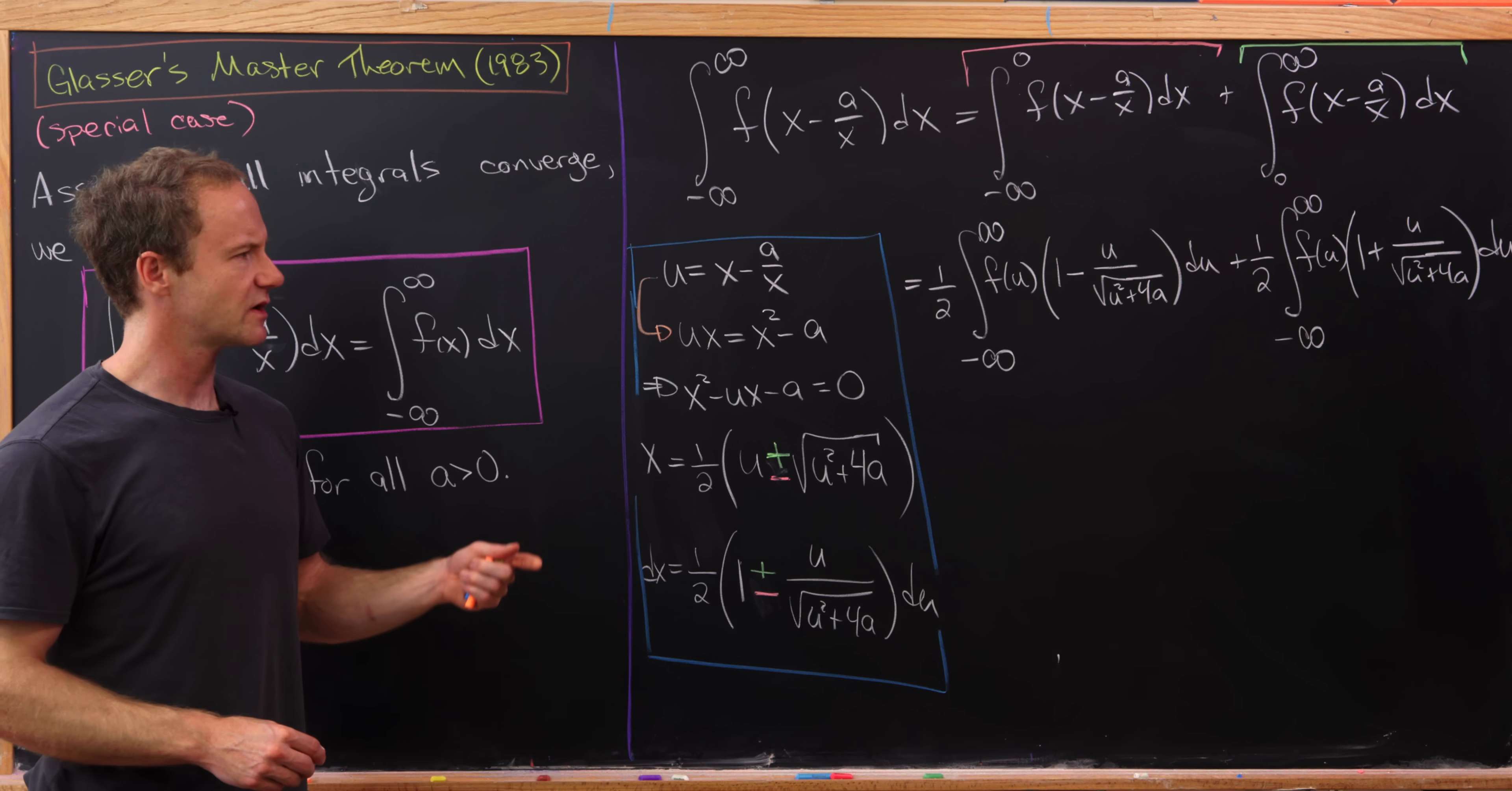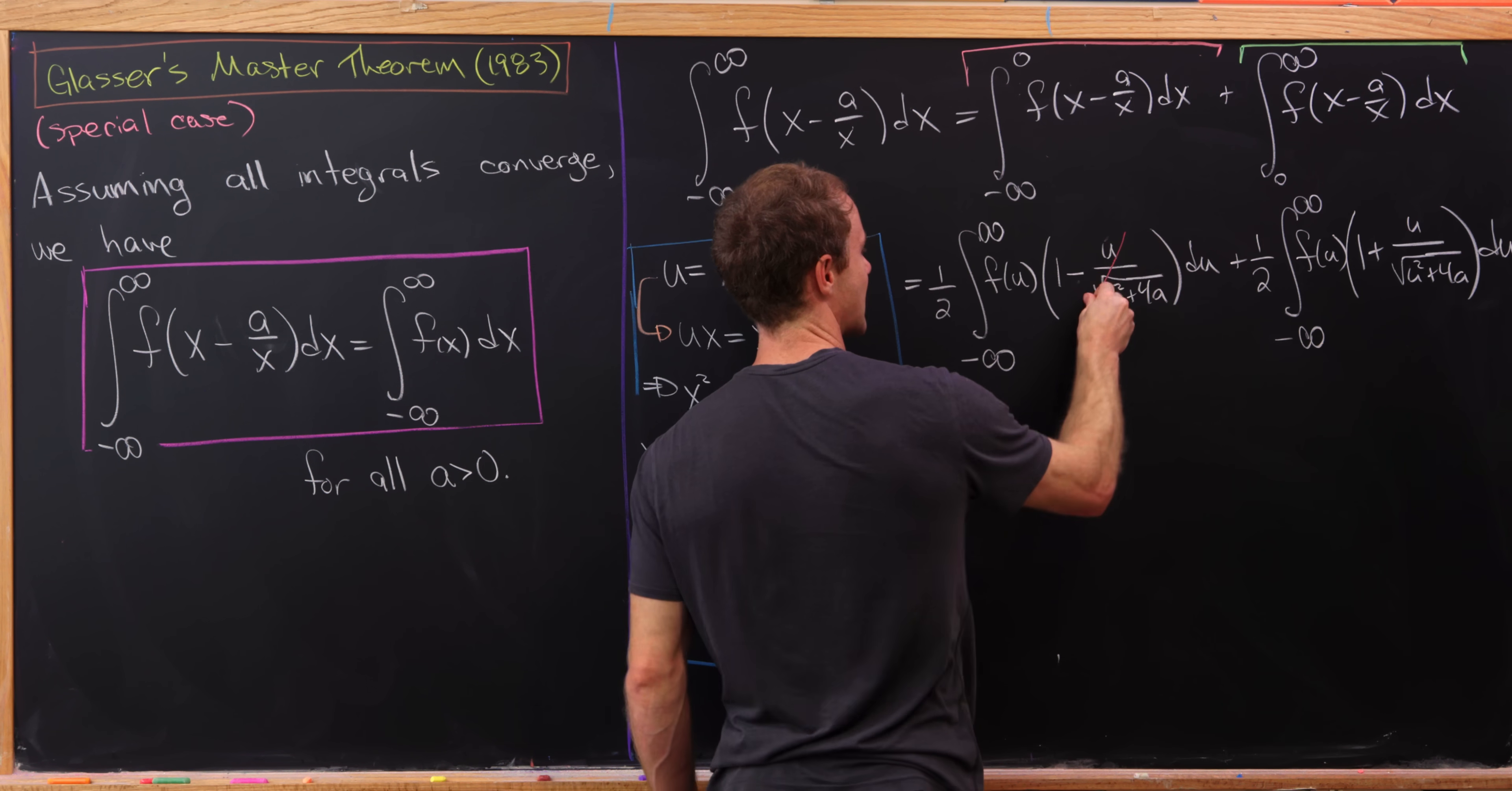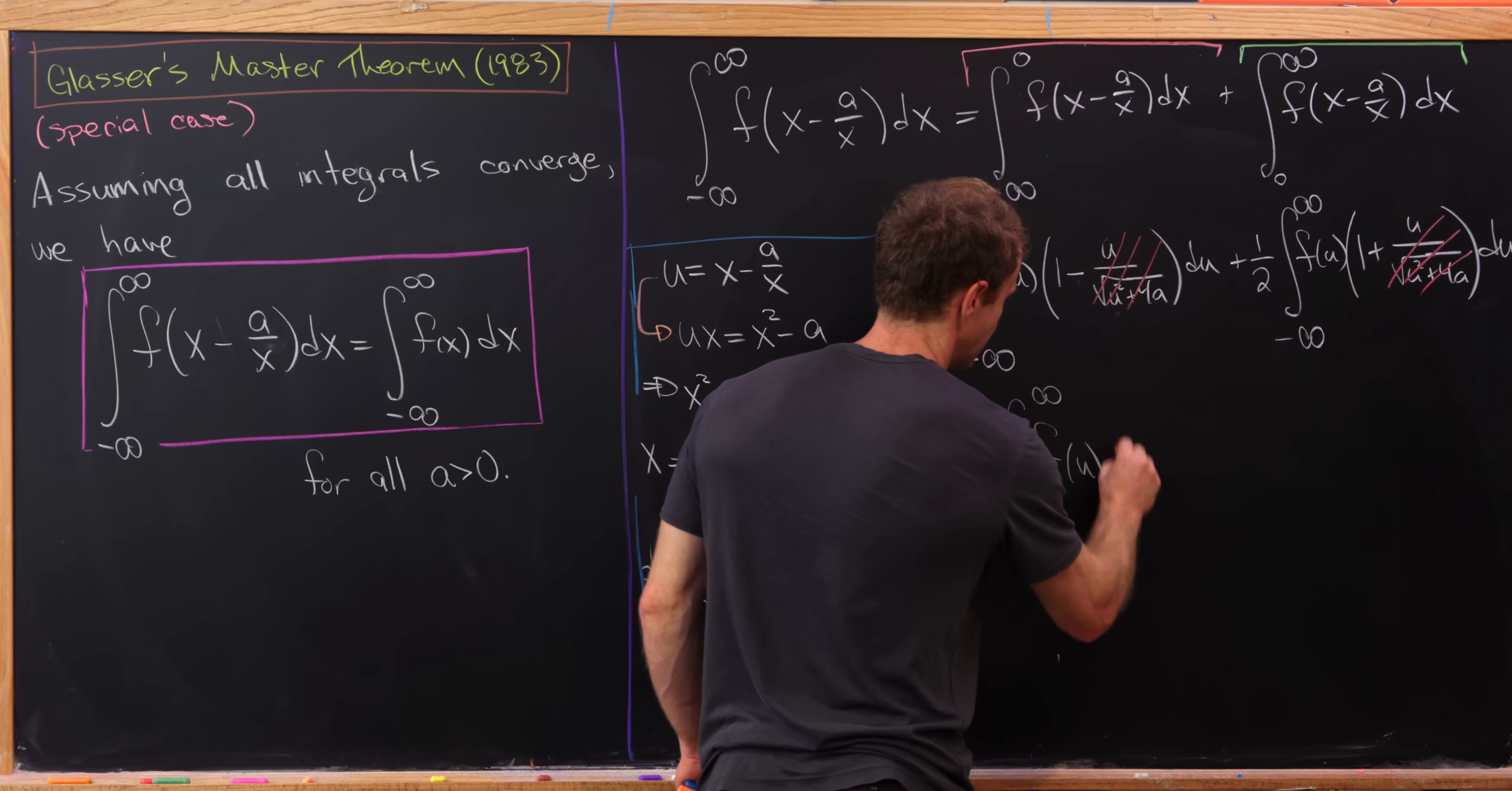But now notice we're integrating over the whole real line in both cases, so we can just add this together. But check it out, we get some nice simplification. We've got a minus u over square root of u squared plus 4a here and a plus u over the same thing there. So that means when we add these together, those will cancel. And then we've got a half f of u there, a half f of u there. Those will add up to a whole f of u. So that leaves us with the integral from minus infinity to infinity of f of u du.